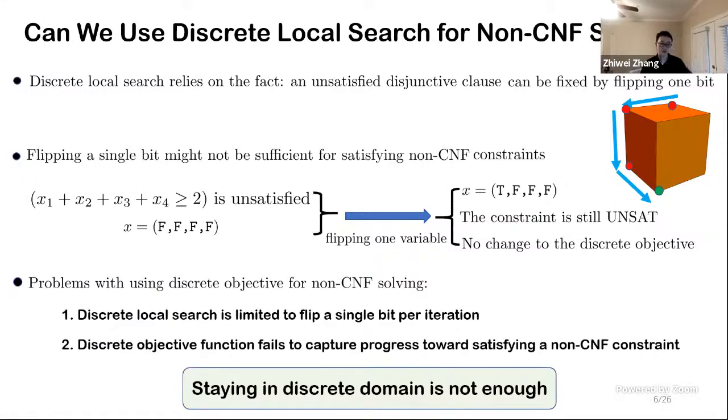That indicates some problems with using discrete objective for non-CNF solving. The first one is that discrete local search is limited to flip a single bit per iteration. Second, discrete objective function fails to capture the progress towards satisfying a non-CNF constraint.